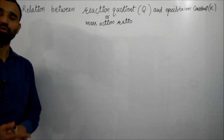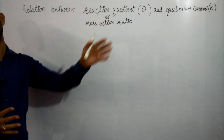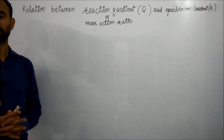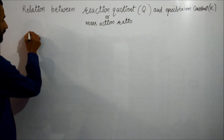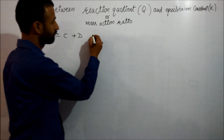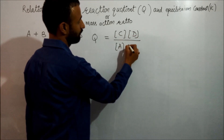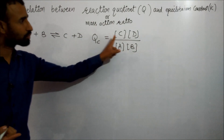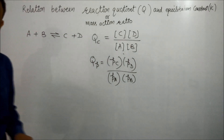Welcome back friends. Today we will learn the relation between reaction quotient and equilibrium constant. Reaction quotient is also known as mass action ratio. If we have a reaction like A + B → C + D, then QC equals concentration of C times D divided by concentration of A times B. This is called QC — the reaction quotient in terms of concentration. If expressed in terms of partial pressure, it is called QP.